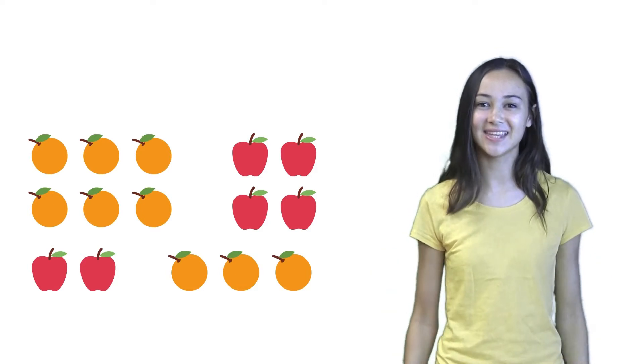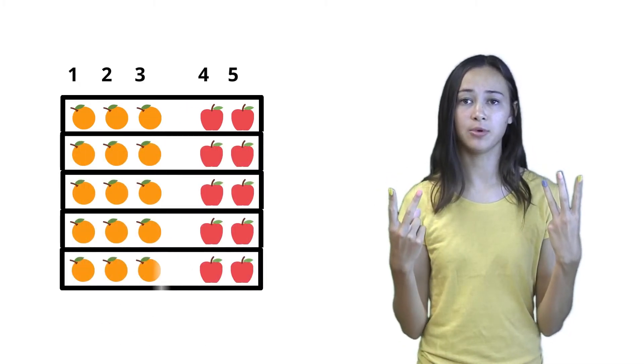See, it's the same thing. So this tells us that Martha has to use oranges and apples in groups of five, where there are three oranges and two apples in each group.